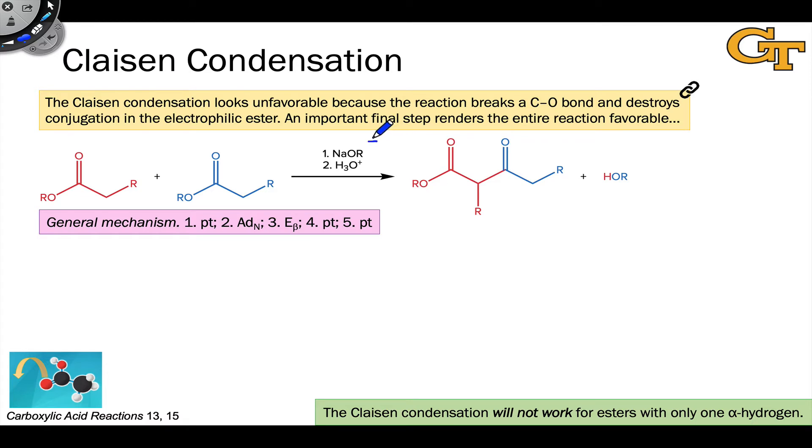The Claisen condensation involves the treatment of an ester with an alkoxide base, which we can represent as OR-. In the first step of the mechanism, OR- deprotonates the nucleophilic ester to generate an enolate. Now, OR- is less basic than the enolate that gets generated on the product side, so this step actually favors the reactants. Nonetheless, we do get a small amount of enolate via deprotonation at the alpha carbon of the ester. Here we're looking at a dimerization, so it doesn't matter which ester we use and it doesn't matter which hydrogen we remove.